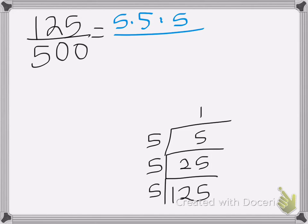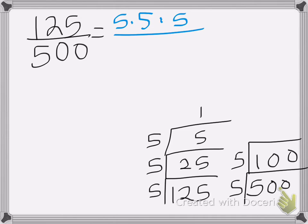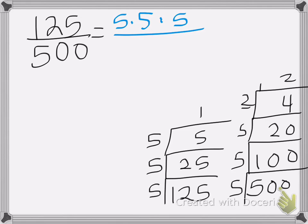Now let's go ahead and do 500. I can divide 500 by 5 and get 100. Divide that by 5 and get 20. Divide that by 5 and get 4. Now I can divide 4 by 2 to get 2. Divide 2 by 2 again and get 1. So the prime factorization of 500 is 2 times 2 times 5 times 5 times 5.